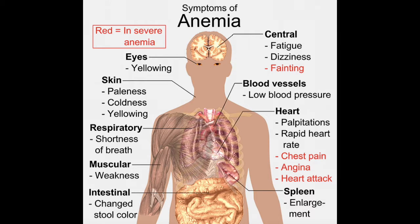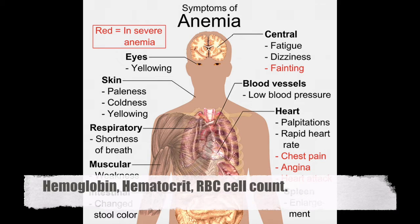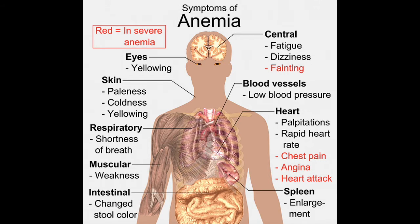So instead of measuring red blood cell mass, we use surrogate markers. These surrogate markers help us make an effort to determine exactly what the patient's red blood cell mass might be. The three key laboratory studies used are hemoglobin, hematocrit, and the red blood cell count — and these three markers are used as surrogates for red blood cell mass.